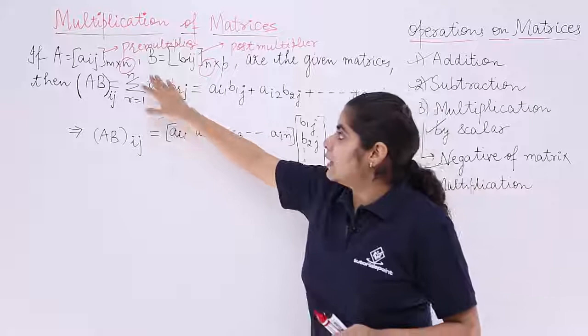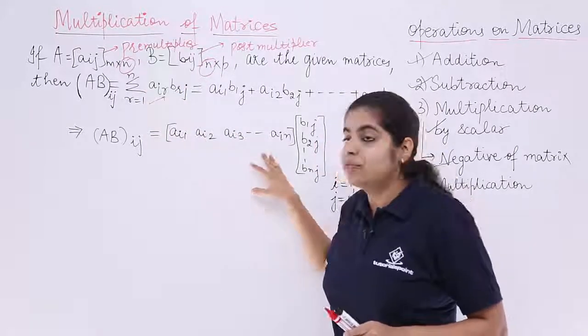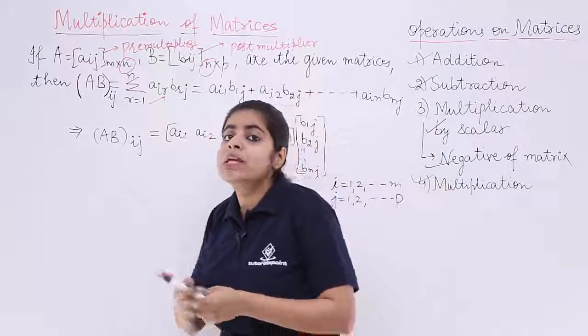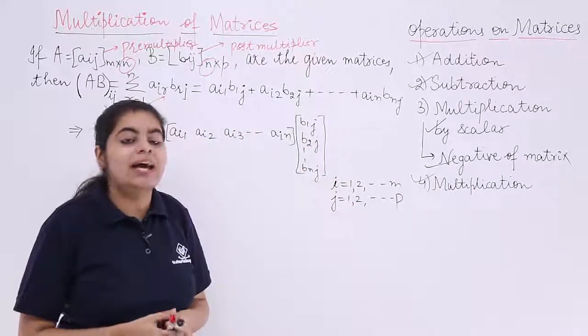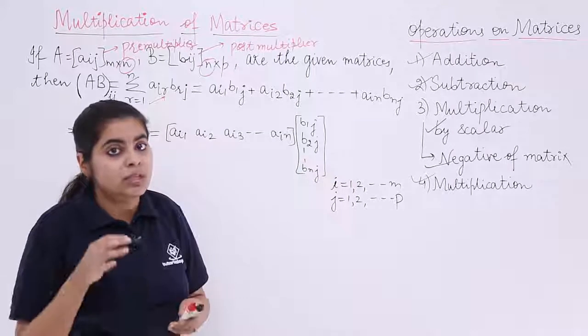We write it in the manner as first matrix is written in the form of a row matrix that is AI1, AI2 and so on. Second will be written in the form of a column matrix and then we will be multiplying and adding each element. Still not understood?